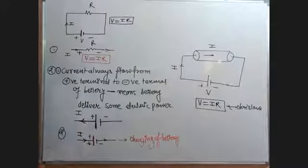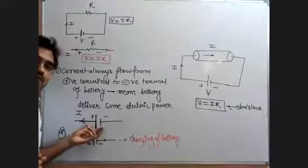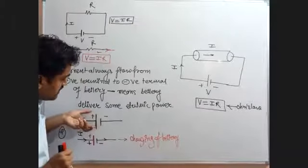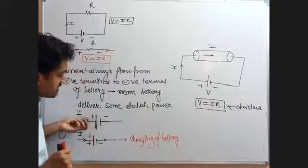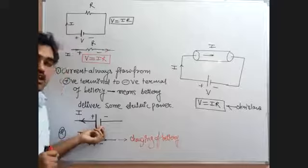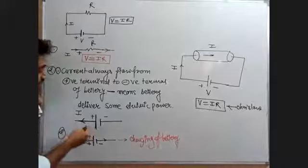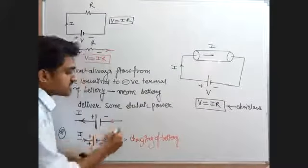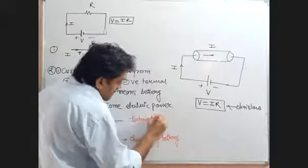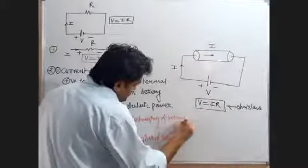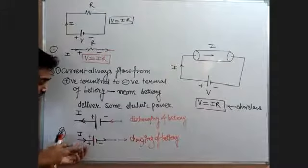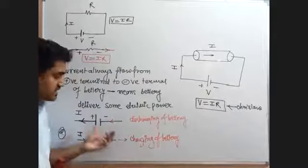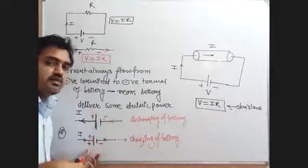These two concepts you have to remember always. First concept: when representing any battery or cell, we use two vertical lines — the larger line represents the positive terminal and the smaller line represents the negative terminal. Second concept: if current is leaving from the positive terminal and entering the negative terminal, it is discharging of the battery and energy is delivered by the battery. For the opposite case, when current enters the positive terminal and leaves the negative terminal, it is charging of the battery and energy is absorbed by the battery.